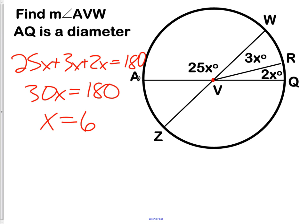Now we go back to the question that was asked, which is, find the measurement of angle AVW. If X has a value of 6, we plug that back in, and 25 times 6 would give us 150 degrees. We have our answer.